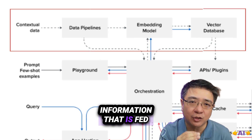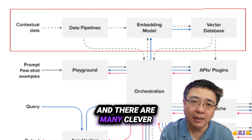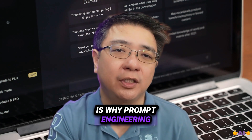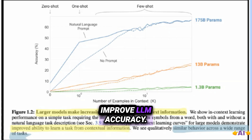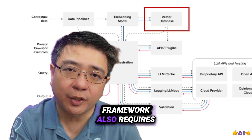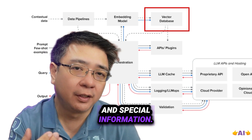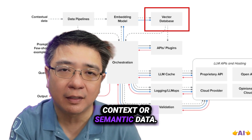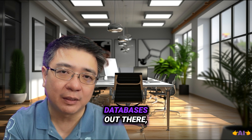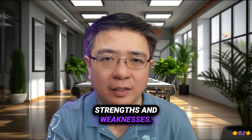Context is a set of information that is fed into the LLM to generate your desired response. There are many clever ways to build context, which is why prompt engineering is becoming important. Studies have shown that putting more relevant context can significantly improve LLM accuracy. Building your own context framework also requires a vector database to store proprietary and special information. They are designed to work better than traditional databases for storing and searching context or semantic data. There are many vector databases out there like Pinecone, QDRANT, and Milvus, each having its own strengths and weaknesses.